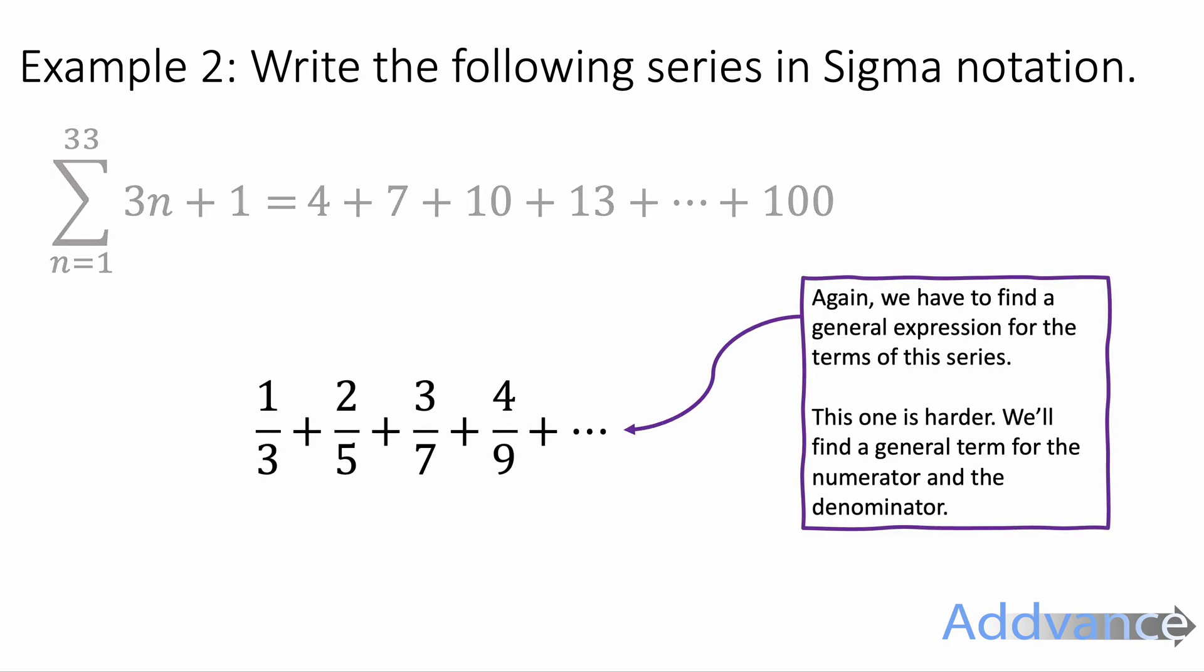Now we've got a third plus 2 fifths plus 3 sevenths plus 4 ninths. And again we need to find a general expression for this series. This one is harder. We're going to find a general term for the numerator of those fractions and a general term for the denominator of those fractions separately.